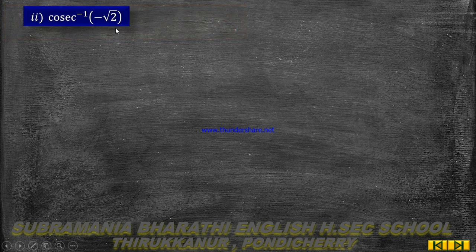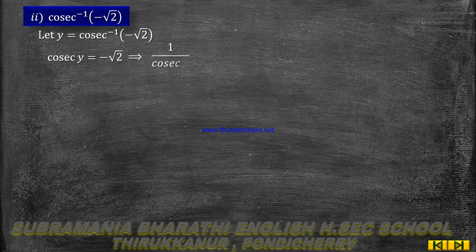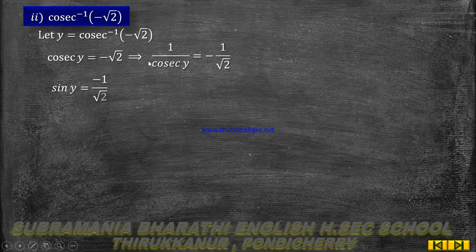The second substitution: cosecant inverse of minus root 2. Let y equal to cosecant inverse of minus root 2, so cosec y equal to minus root 2. Taking reciprocal on both sides, 1 by cosec y equal to minus 1 by root 2.